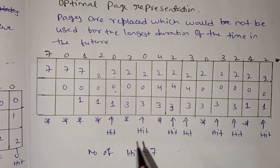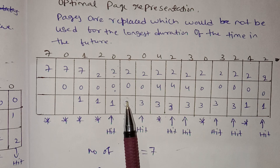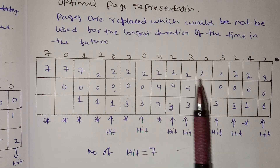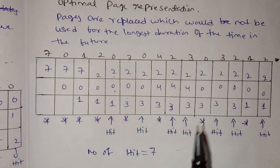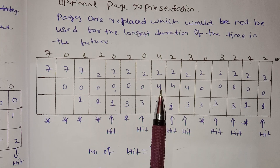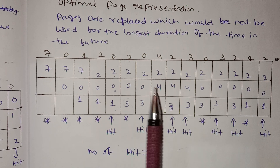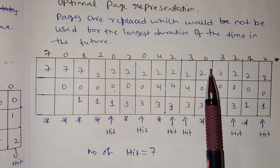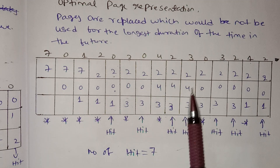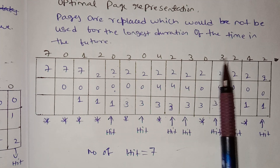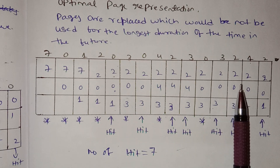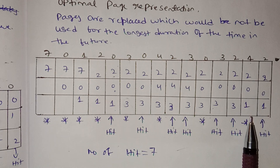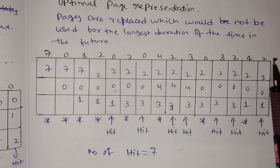Next, 0 is already present — hit. Then 4, we need to replace — remove 3 since it won't be used soon. Then 2 comes — 2 is already here, hit. Then 3 comes — 3 is replaced. Then 0 is removed. Next is 3, hit. Next is 2, hit. Next is 1 — replace 3 with 1, page fault. Next is 2, hit.